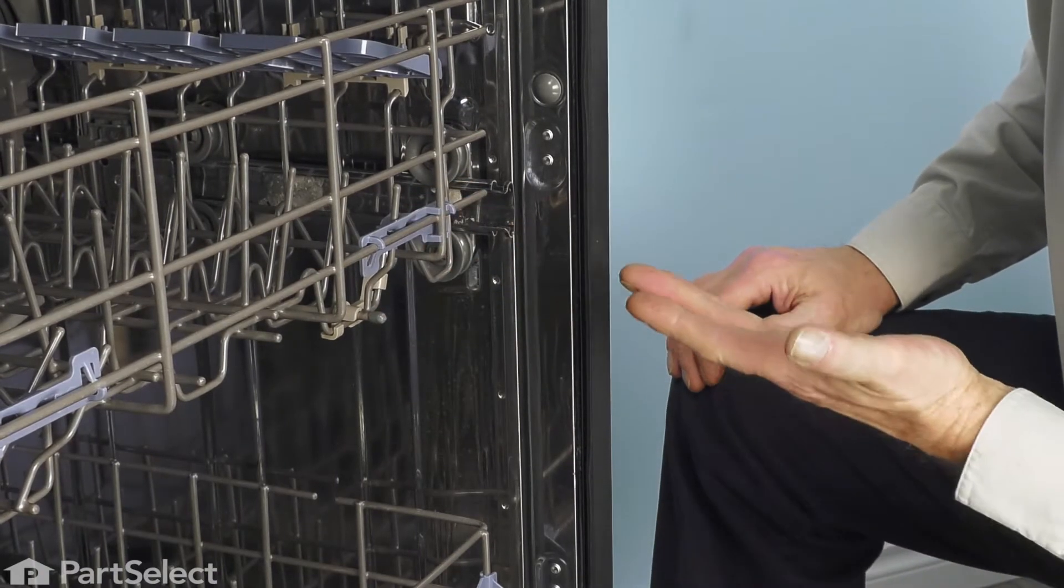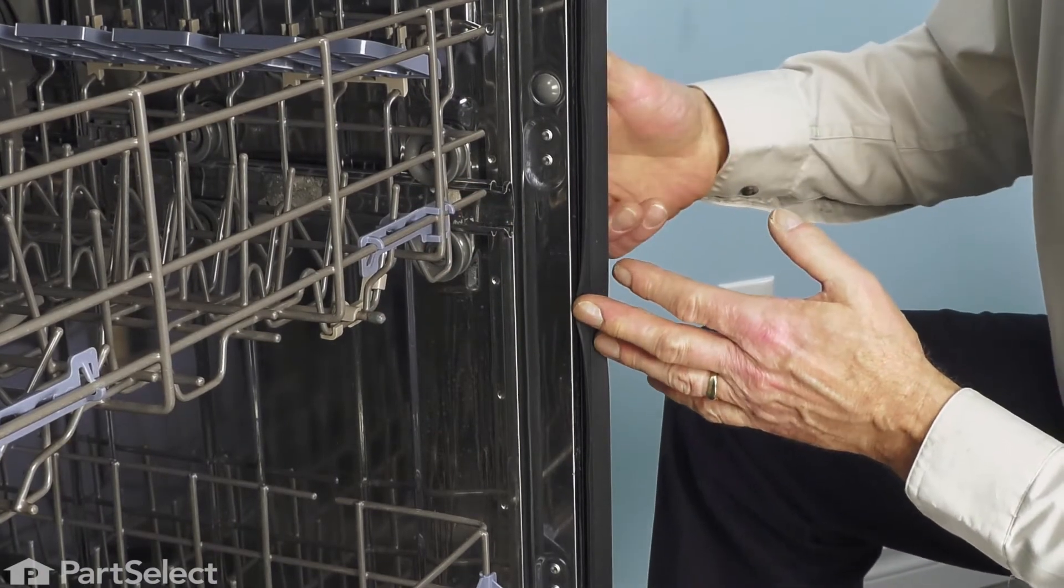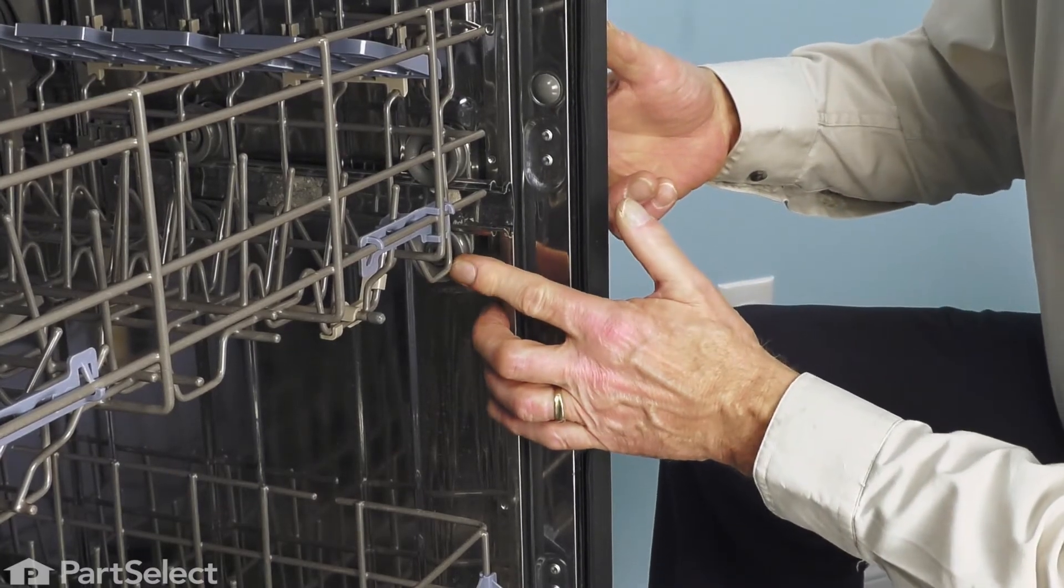Next, we'll need to make sure that we pull the dishwasher out far enough that we can access the two mounting screws that secure the tub wheel to the tub.